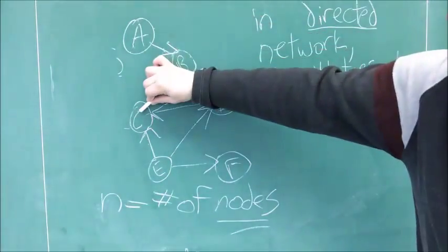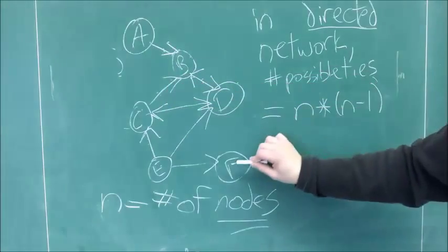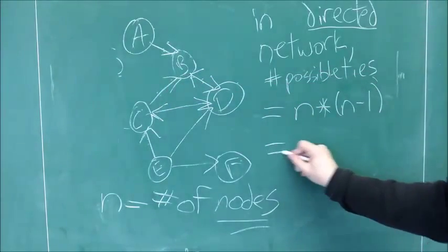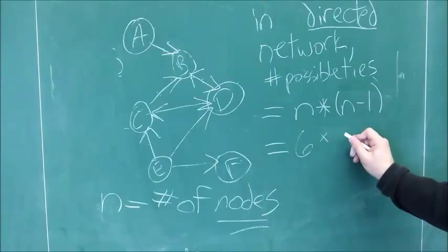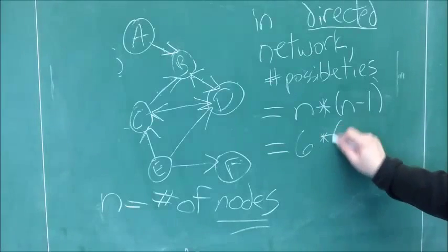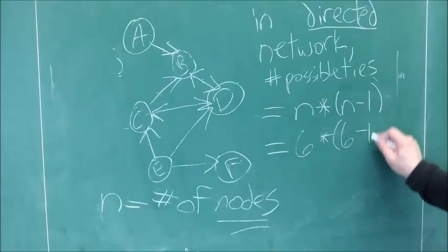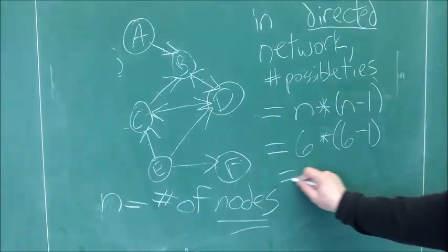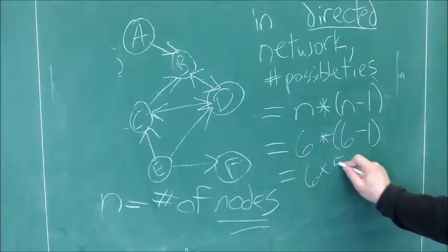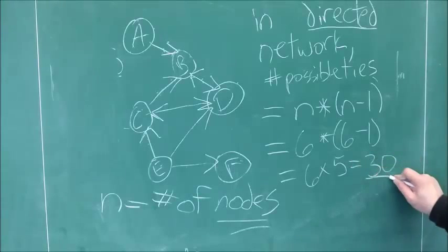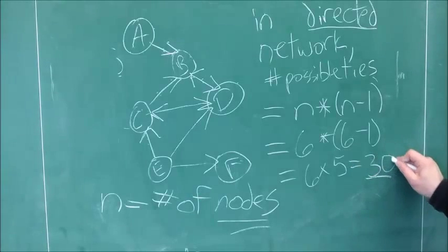Now, in a directed network, the number of possible ties equals n times (n minus 1) divided by nothing. How many nodes are there? Still 6. And 6 minus 1 is 5. So, 6 times 5 equals 30. There are 30 possible ties.